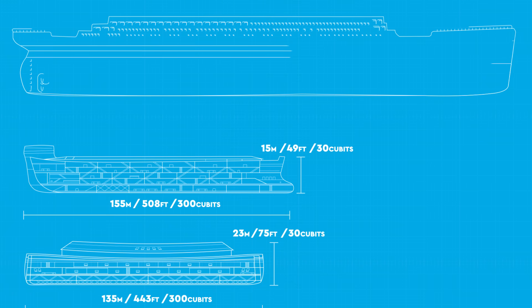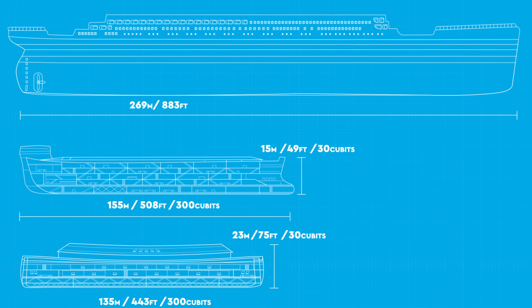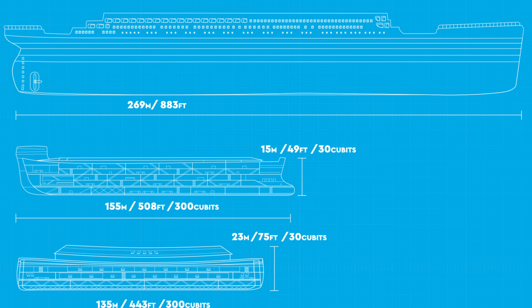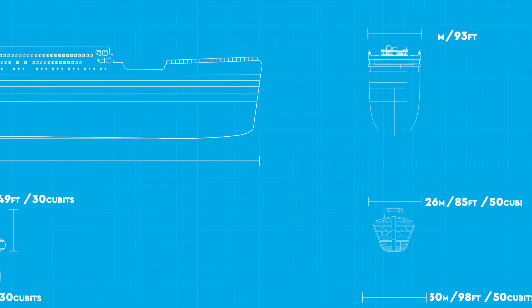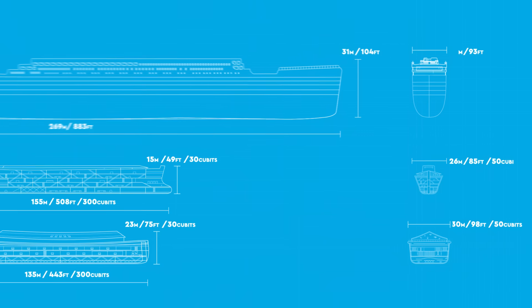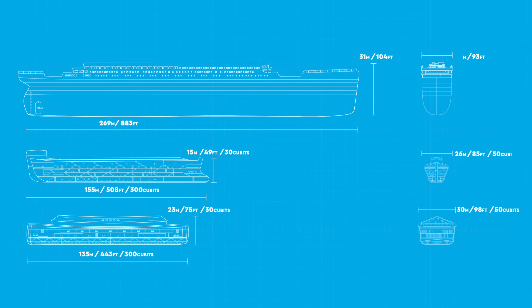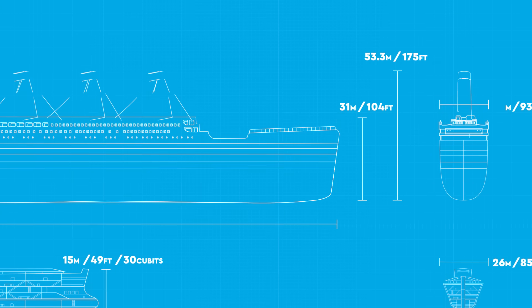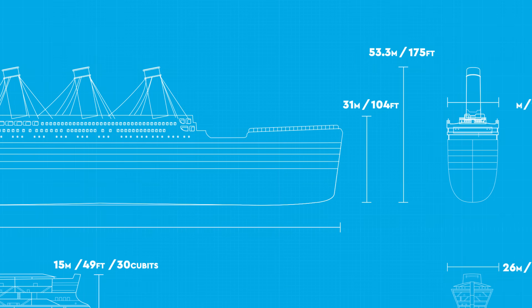To put that into perspective, the Titanic was 269 meters or 883 feet long, 28 meters or 93 feet wide and about 31 meters or 104 feet deep. Sure, it's even taller if you include everything, but you can't keep passengers in a funnel.